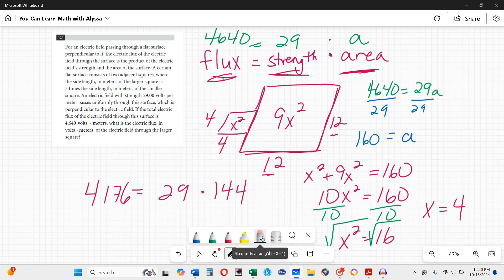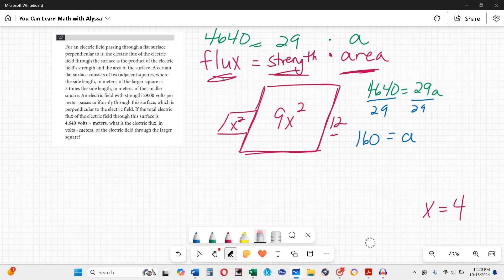Here's something else you can do. We don't actually have to solve. I'm gonna say again x, x, 3x, 3x. Once you get to this point where 4640 is the total flux, it's equally distributed through these two squares.